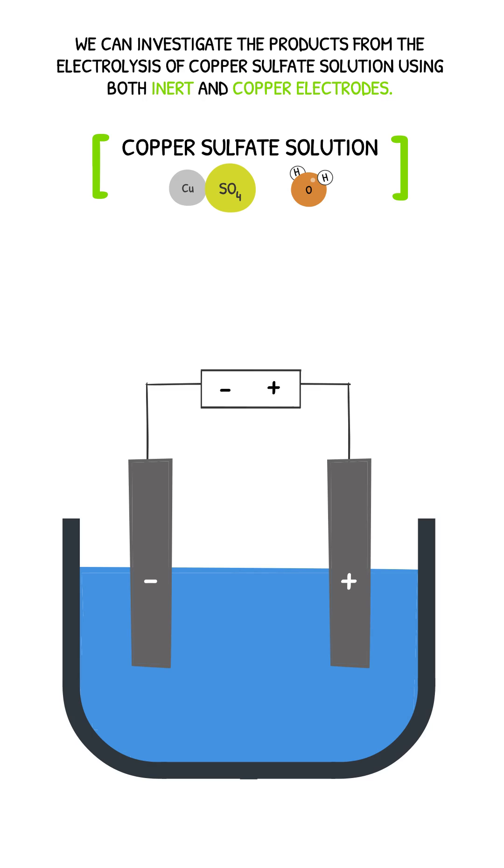When inert electrodes are used, the solution splits into copper, sulfate, hydrogen and hydroxide ions.